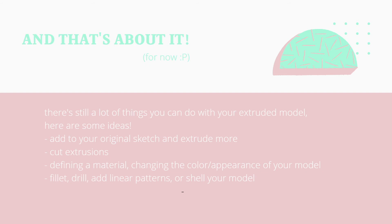And then that's pretty much it, but there's a lot more that you can do — this is just a super basic floating blob. You can add more extrusions by sketching more shapes on that object. You can also make cut extrusions, define the material, or change the color or background for your model. You can fillet the object, which means rounding out any harsh edges. You can add drill holes, linear patterns, mirror things, or shell out the model.